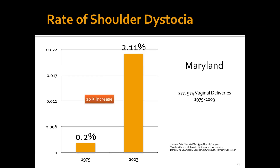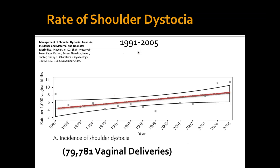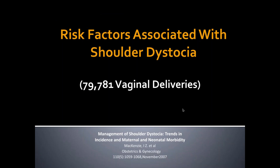Regarding the rate of shoulder dystocia: a study looked at 277,974 vaginal deliveries between 1979 and 2003. The rate of shoulder dystocia was 0.2% in 1979 and increased to 2.1% in 2003 — a tenfold increase. Another study of 79,000 deliveries shows the same increasing trend with time. The question is why — our fetuses are getting bigger, as we will see.